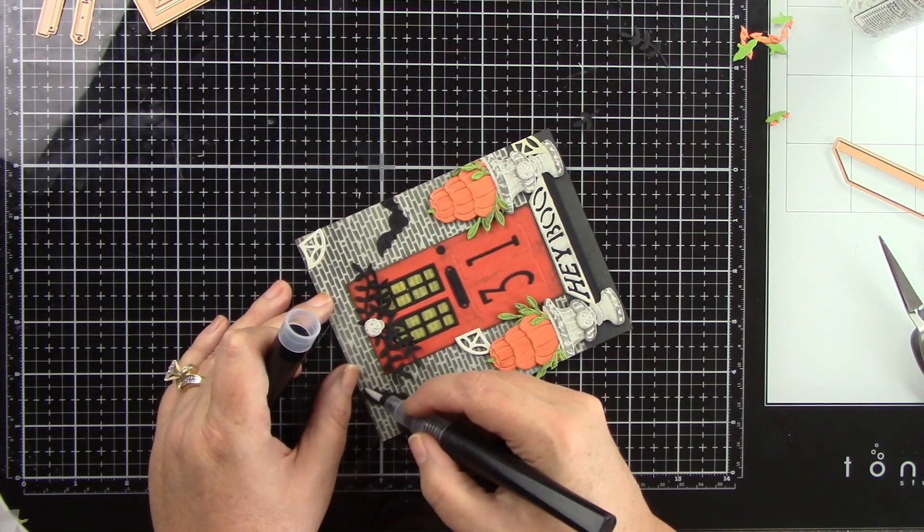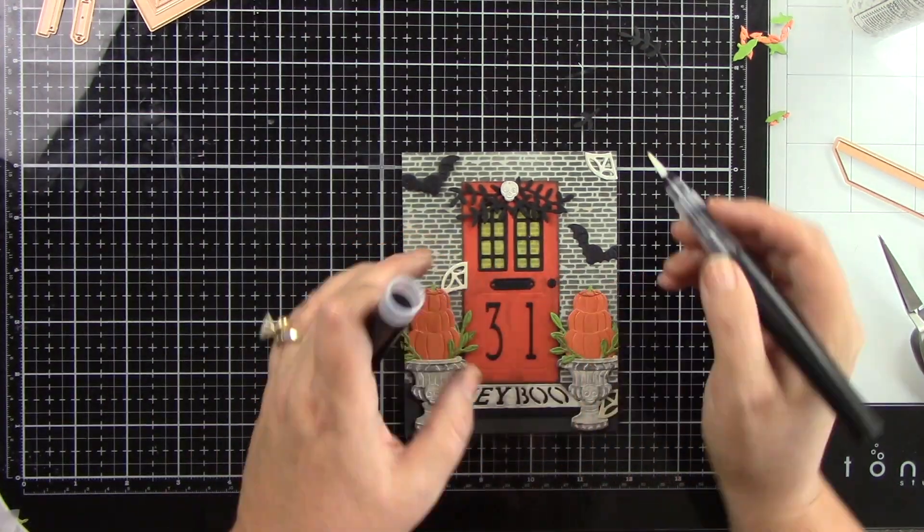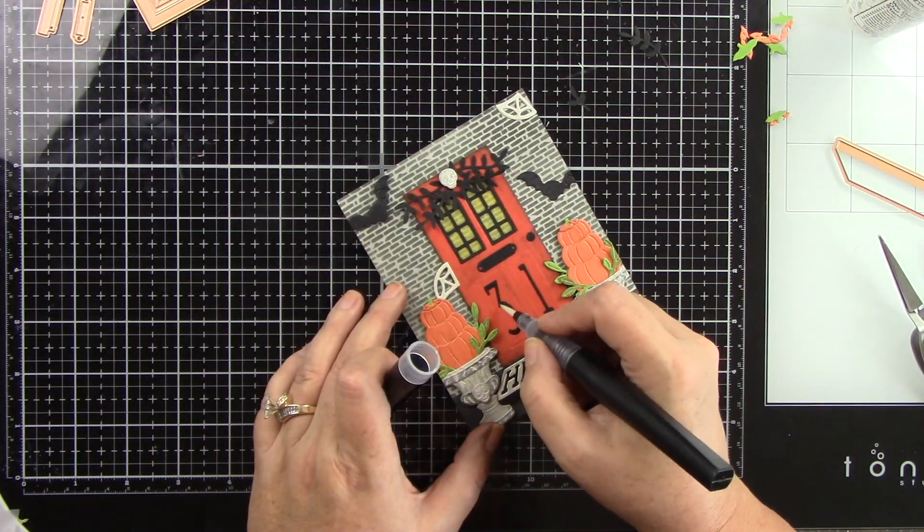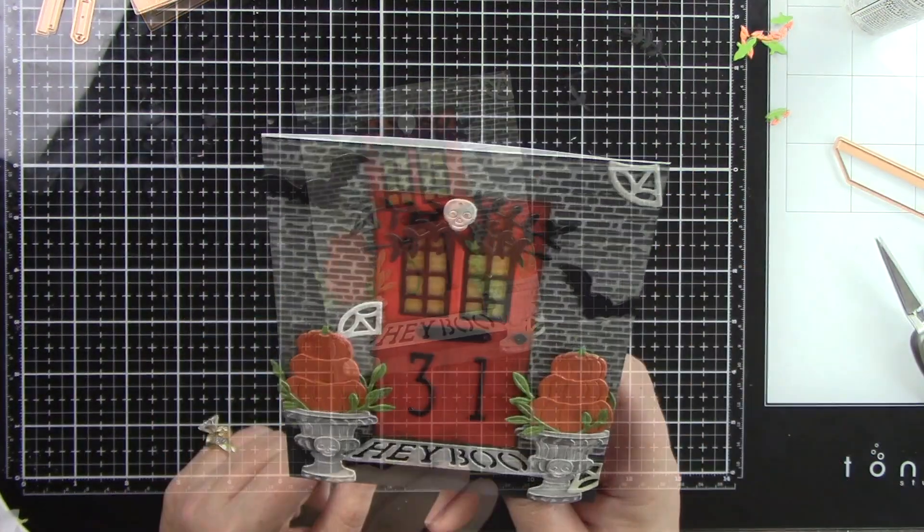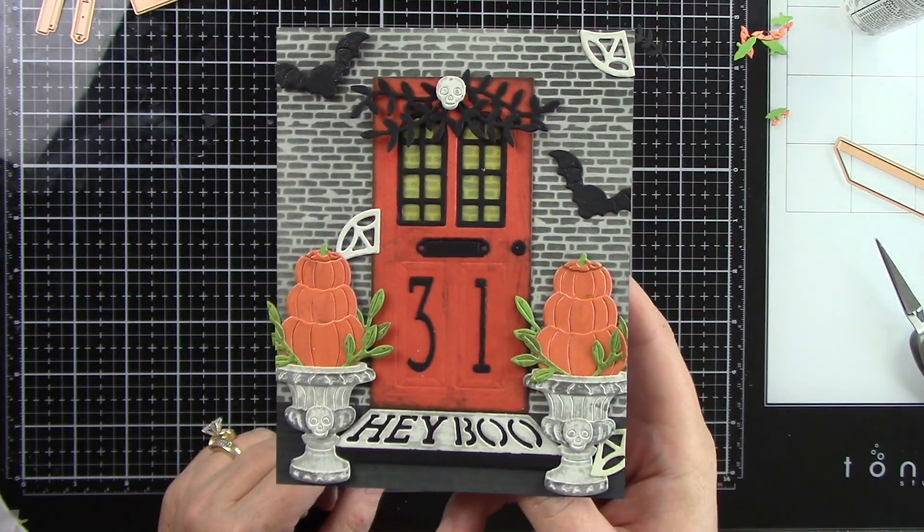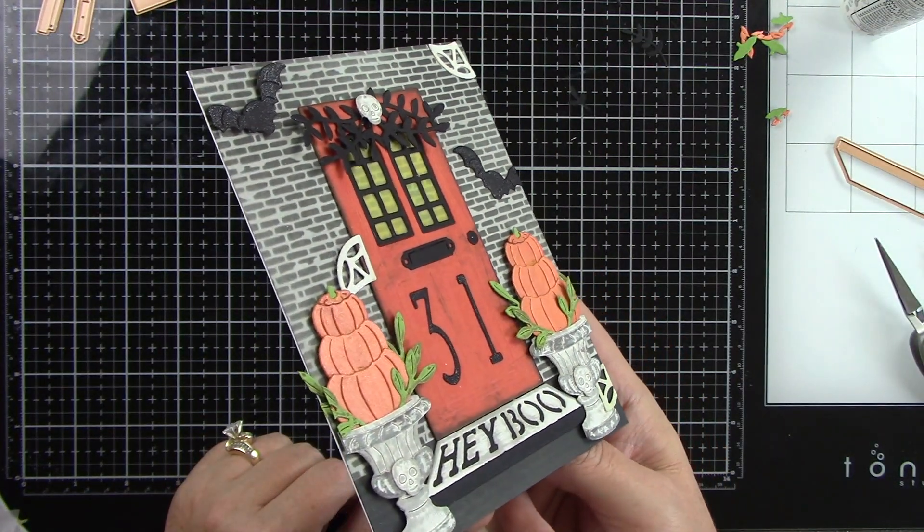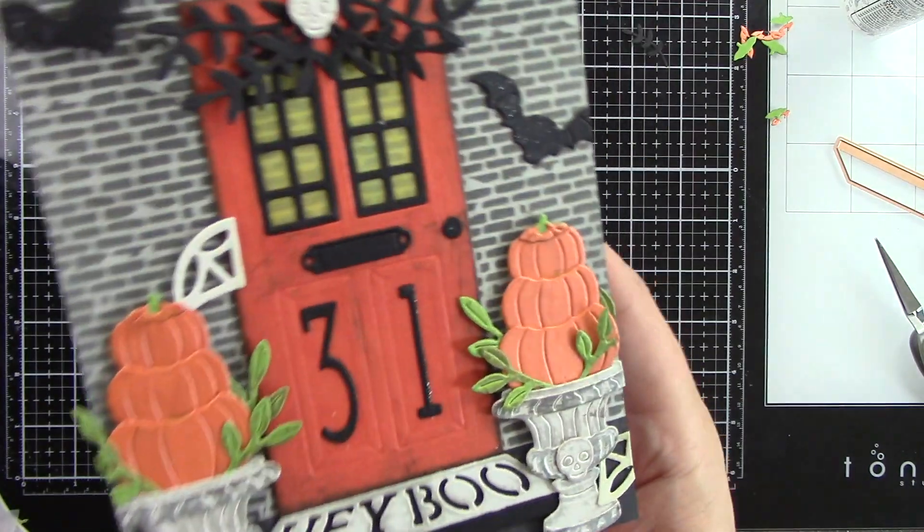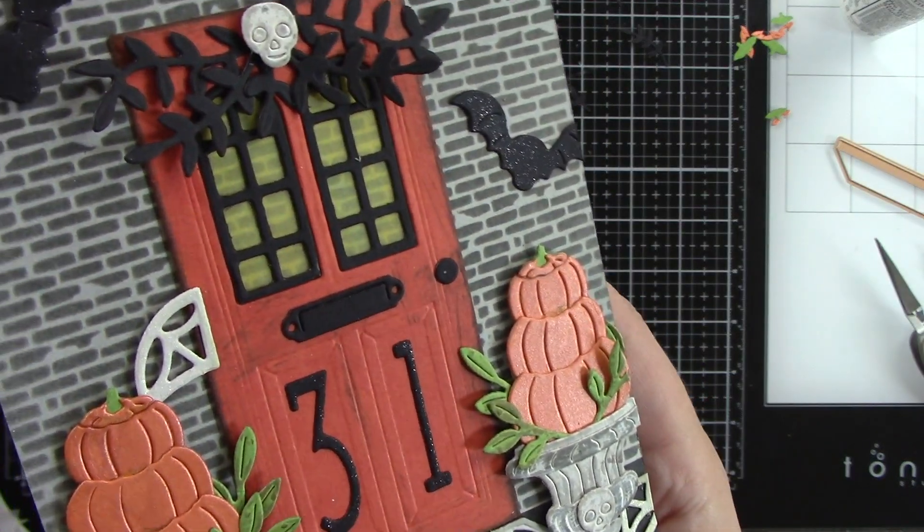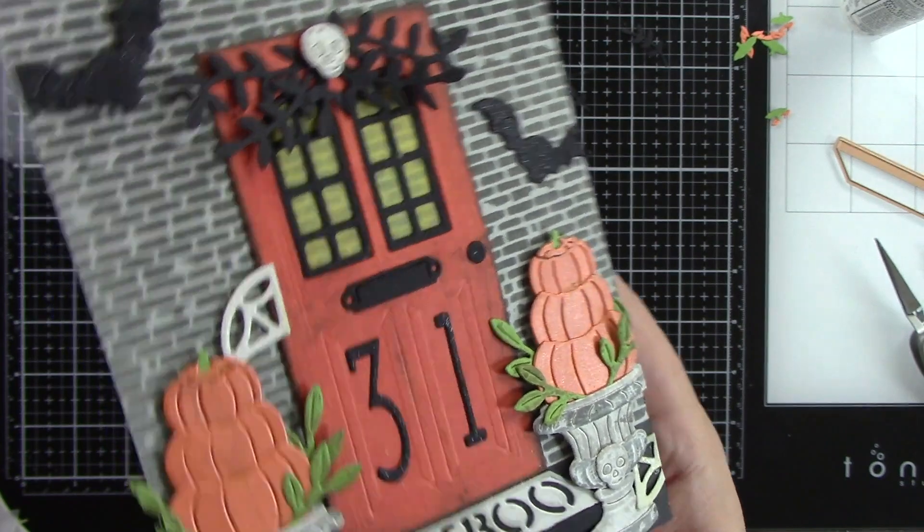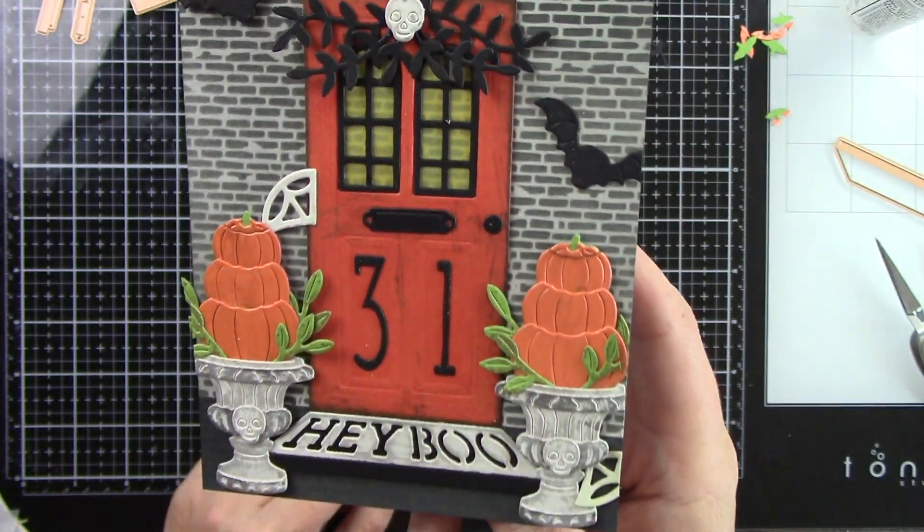I did decide to add a little bit of glitter to the bats and the 31 on the door. I felt like it just needed a little bit of glitter. And isn't that so super darling? I just love how this card turned out. These open house add-ons to the door base are so super cute, and this was just so fun.